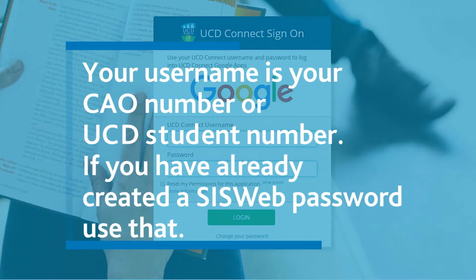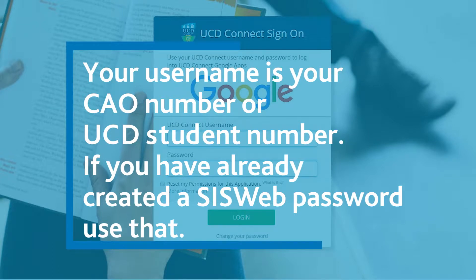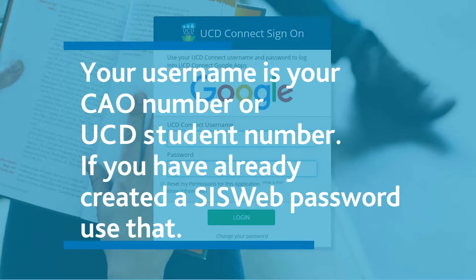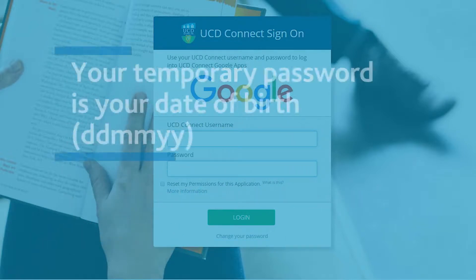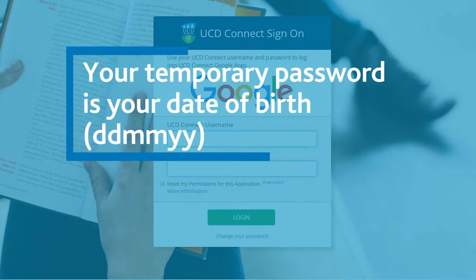Your username is your CAO number, or if you've been here before or are a direct applicant, use your UCD student number. If you have already created a Sysweb password, please use that. Otherwise, your temporary password is your date of birth in the format ddmmyy.